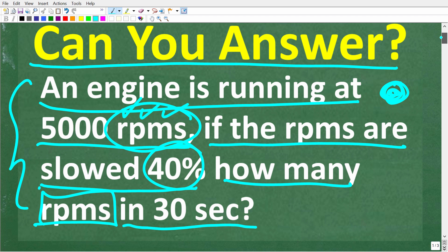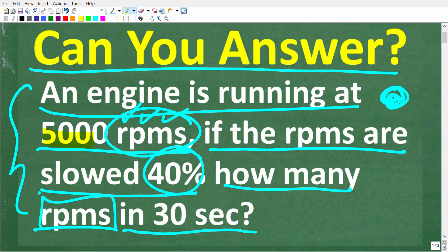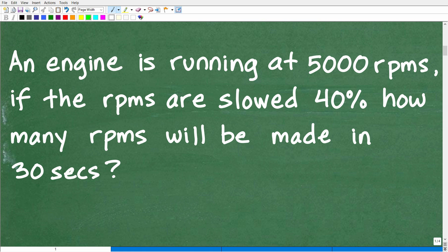All right, so one more time, we have this engine that is running at 5,000 RPMs. And we're going to slow the engine speed down by 40%. So after that, how many revolutions are going to be made in 30 seconds? Okay, so let's go ahead and get into it right now.